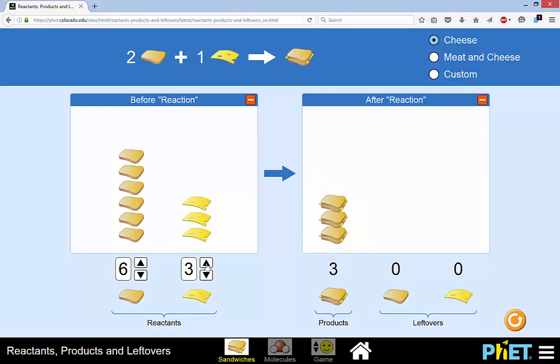But what if we muck up the ratio of reactants and put in five slices of cheese? Well what happens is that the bread runs out before all the cheese has reacted and we're left with excess cheese, leftovers.